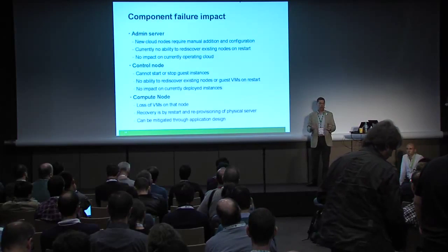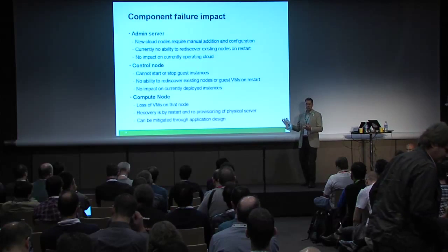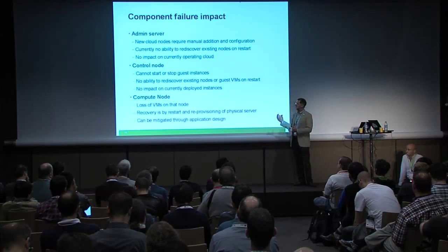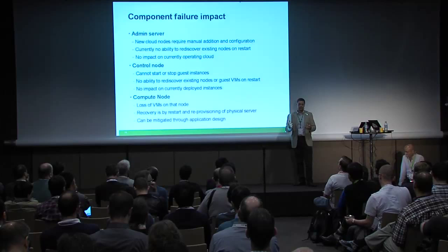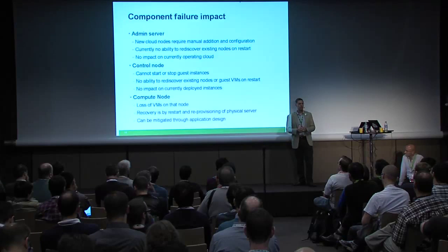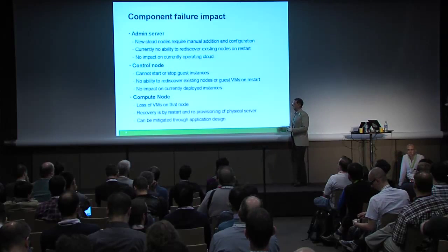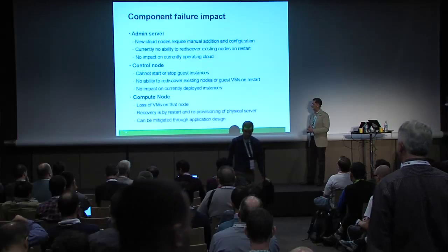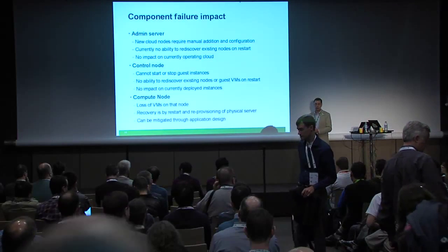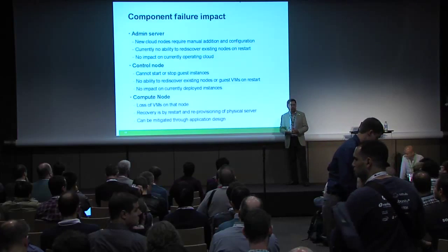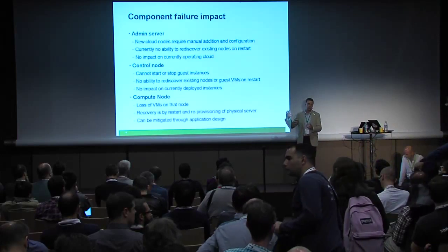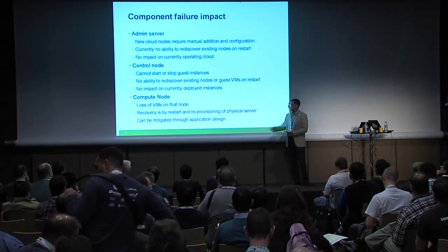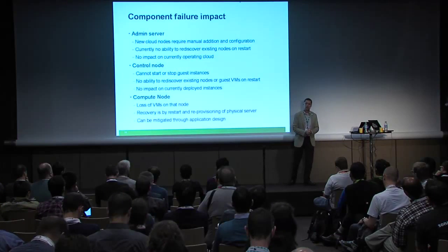If the control node goes down, at a minimum you can't start and stop guest images. But in reality, if you're running Cinder, Nova, or Neutron and you lose the control plane, pretty much your whole cloud is going to go away - even existing workloads will stop running. If the compute node goes down, you obviously lose all the VMs running on that cloud and have to reprovision the server. The cloud way to deal with this is a multi-tier environment where you assume physical servers are going to fail, and mitigate it through correct application design.